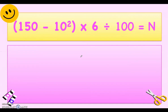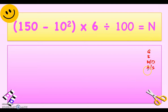We have: open parenthesis 150 minus 10 squared close parenthesis times 6 divided by 100 equals n. Write here GEMDAS. Multiplication or division whichever comes first, and addition or subtraction whichever comes first. There are times you divide before you multiply, and times you subtract before you add — whichever comes first in the equation from left to right.